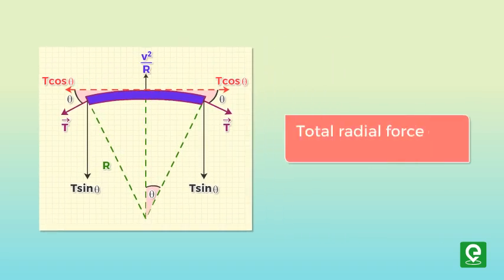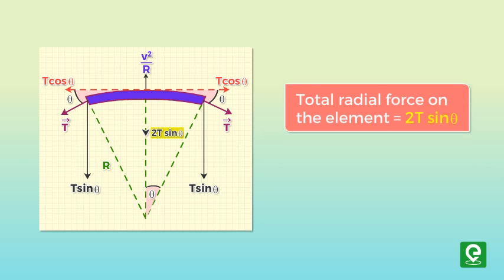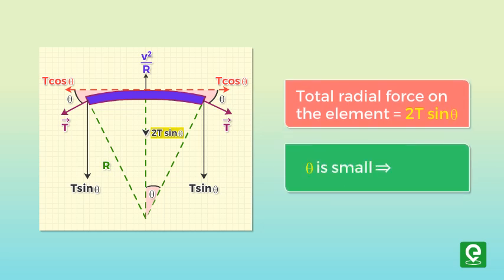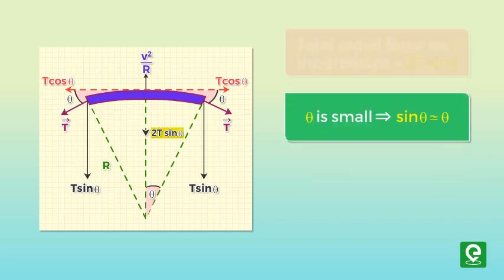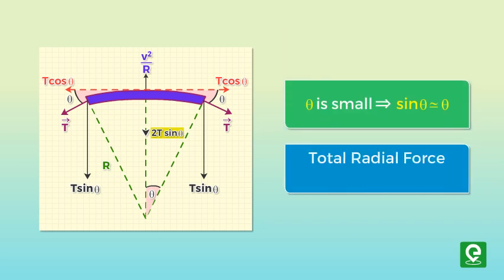Since theta is small, we can use the small angle approximation: sine theta is nearly equal to theta. So the total radial force Fr is equal to 2T theta.